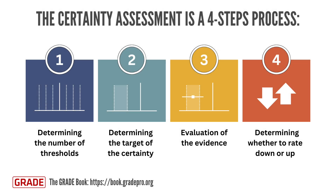Let's explore in more detail the mechanics of the certainty assessment, which involves a four-step process. Step 1: Determining the number of thresholds. The first step is to establish the number of decision thresholds that will be used to evaluate the certainty of the evidence. These thresholds may be determined through consensus or based on empirical data and should be reported transparently.